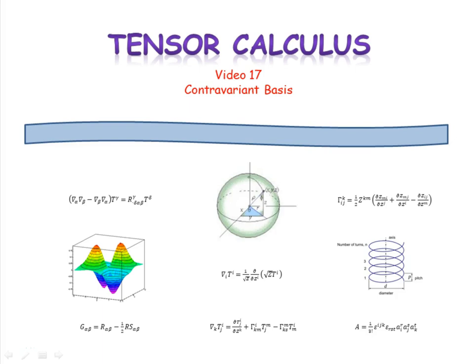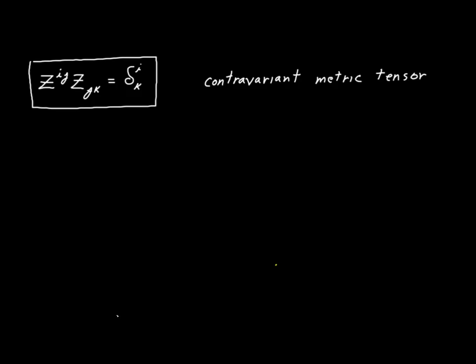Welcome to video 17 in our series on tensor calculus. In video 9, we introduced the idea of a covariant basis. In this video, we're going to talk about its counterpart, the contravariant basis. We'll start by defining a new second-ranked tensor using the expression you see here. You'll recognize the Kronecker delta and the covariant metric tensor. What's new here is this expression, and you see that it is a second-ranked tensor because it has two indexes in the upper position, which means that it possesses the contravariant property.